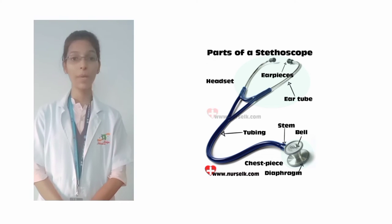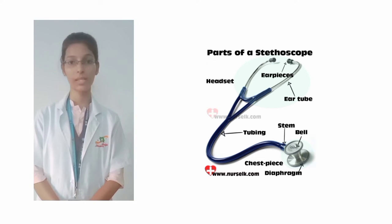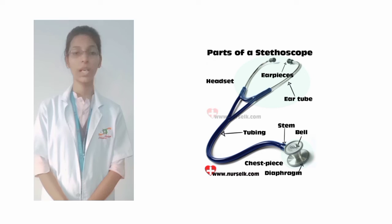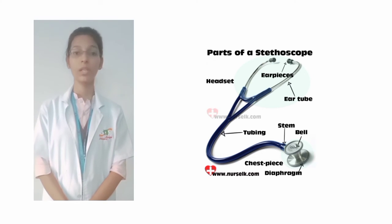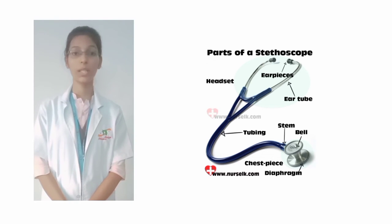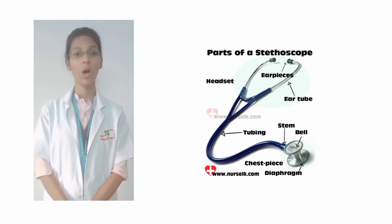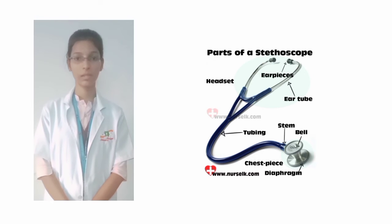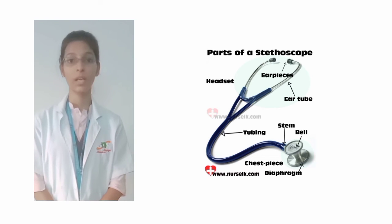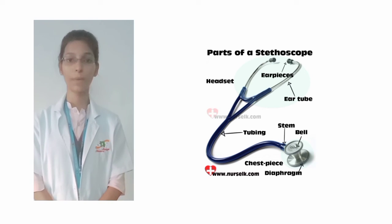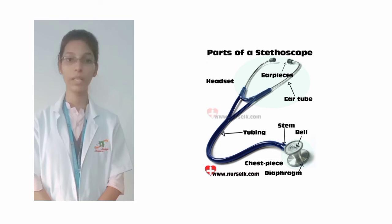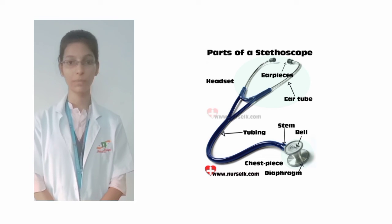The upper half of the stethoscope is the headset. Ear tubes: Ear tubes are hollow metal tubes that connect the acoustic tubes and the ear tips. Ear tips: Ear tips are the part that goes into the ears, which is made up of silicon or rubber.